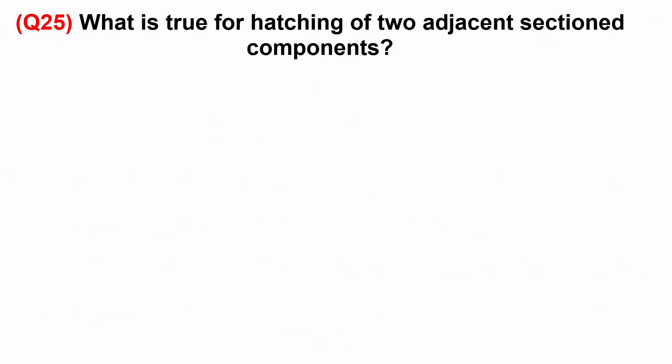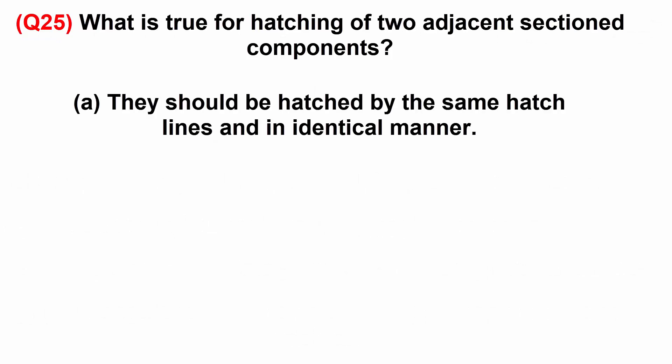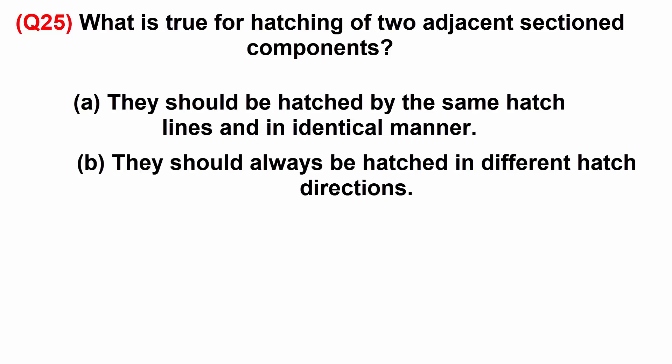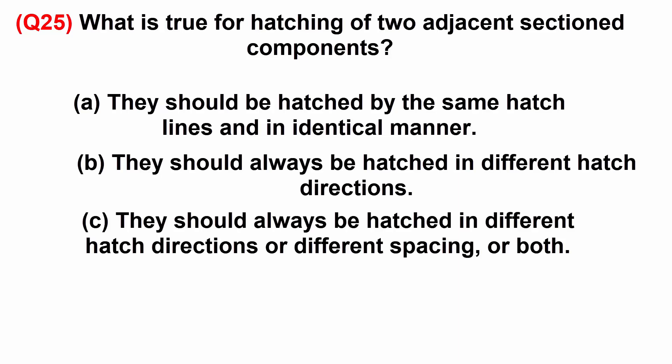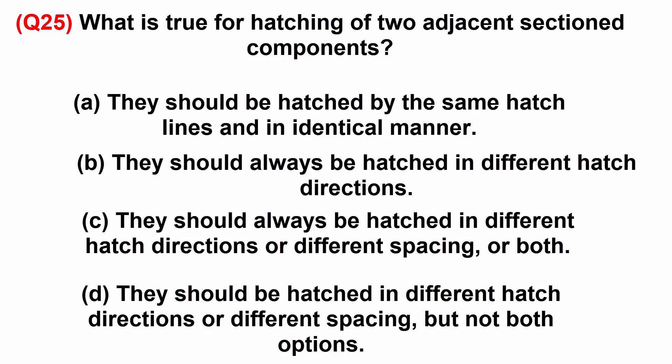What is true for hatching of two adjacent section components? A: they should be hatched by the same hatch lines and in identical manner. B: they should always be hatched in different hatch directions, or different spacing, or both. C: they should be hatched in different hatch directions or different spacing, but not both options.